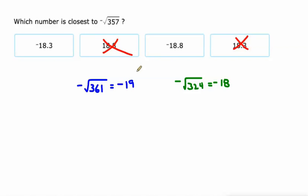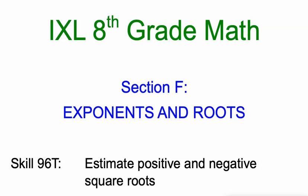Alright. So that didn't help us. Which one's it closer to? It's a lot closer. 357 is a lot closer to 361 than it is to 324. So I think I'm going to choose negative 18.8, which is closer to negative 19 than negative 18.3 is. Alright. So there you go. Estimating positive and negative square roots. Good luck. Let me know how it goes.